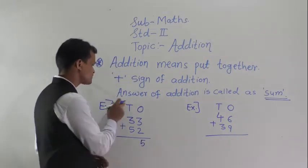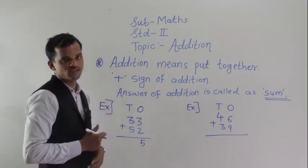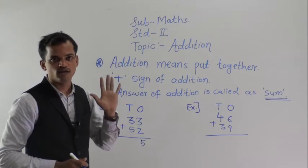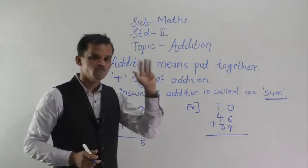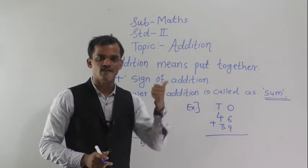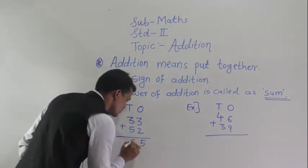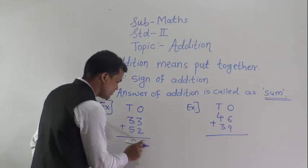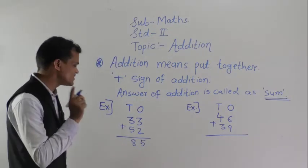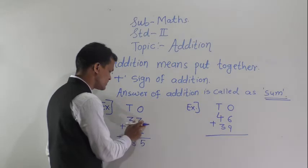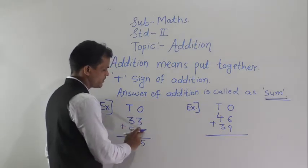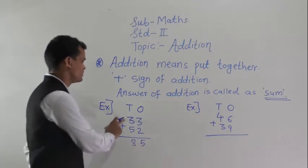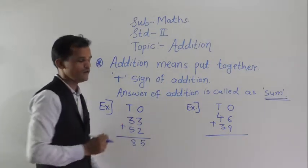Then add the tens place column: 3 plus 5. After 3, count 5 fingers forward — 4, 5, 6, 7, 8. So 3 plus 5 equals 8. Therefore, 85 is the sum of 33 and 52.